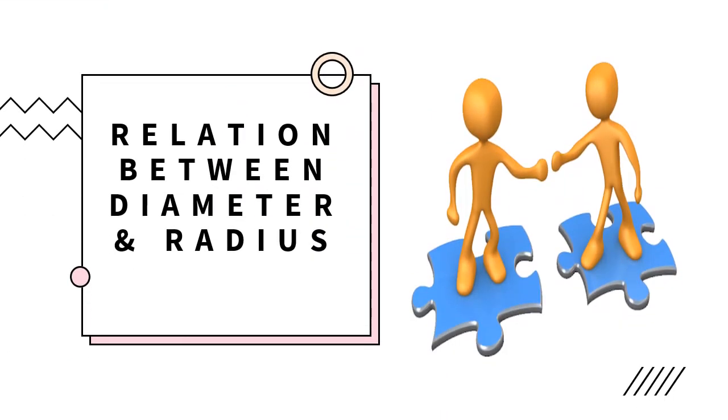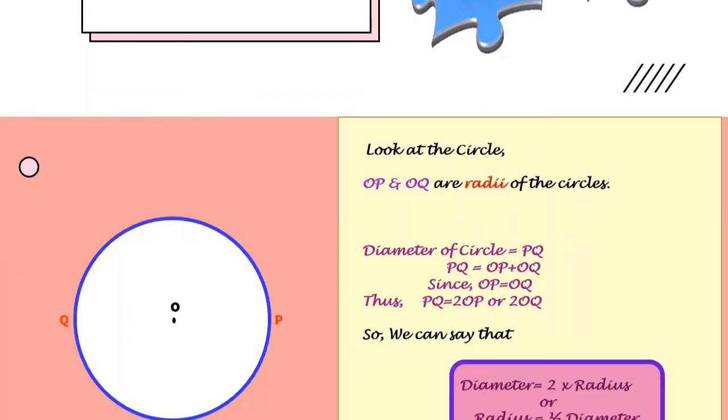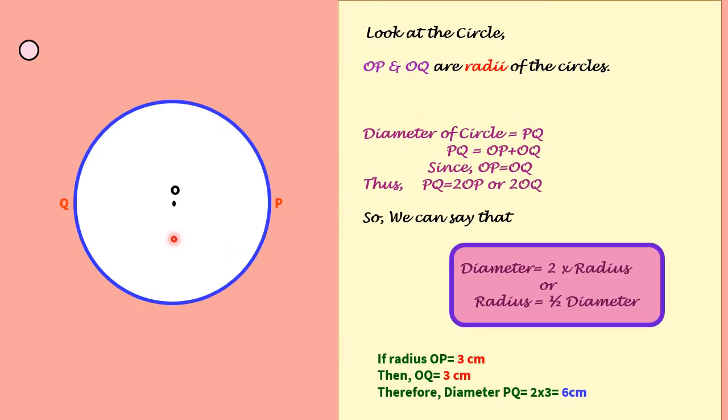Let us study the relation between diameter and radius. Children, look at the circle. In this circle, OP is one radius of the circle and OQ is another radius of the circle.